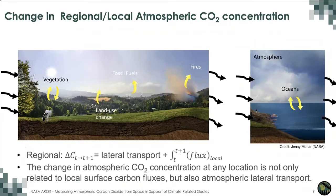While the change of global mean atmospheric CO2 is an integration of all surface carbon fluxes, the temporal change of local and regional CO2 concentration is not only related to surface carbon fluxes but also lateral transport — the so-called background values. The change of atmospheric CO2 concentration over your region or city is not only related to your local carbon fluxes but also CO2 transported from other areas. Air with lower CO2 concentration transported to your area will cause a decrease, and vice versa.